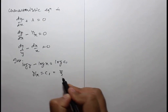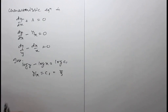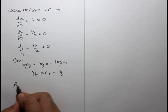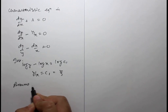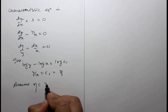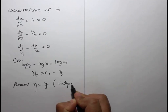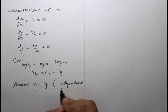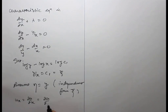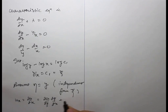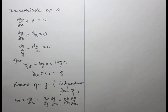Let ξ equals y/x. Now assume η equals y, which is independent of ξ. By the chain rule, we compute the transformed derivatives uxx, uxy, and uyy in terms of ξ and η equals y.